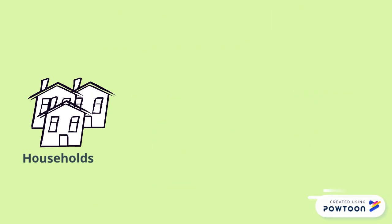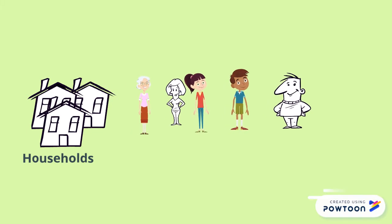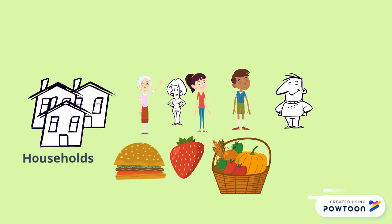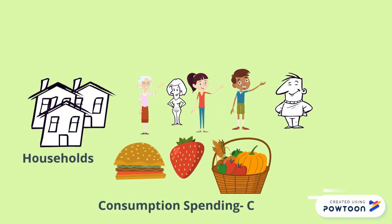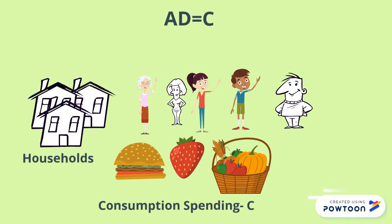Let's consider an example. The household sector is made up of people, and when people spend on goods and services, it is known as consumption spending. The short form for consumption spending is the letter C. Therefore, we say that Aggregate Demand, or AD, is equal to C.